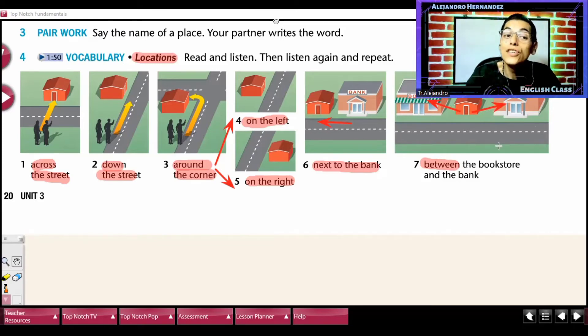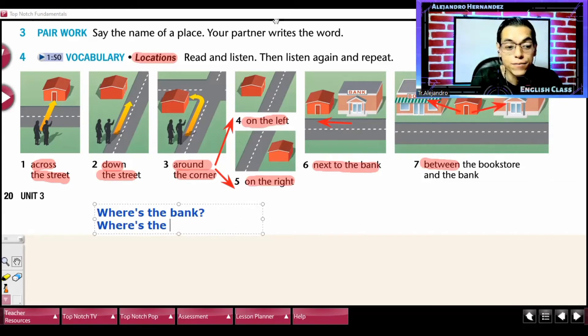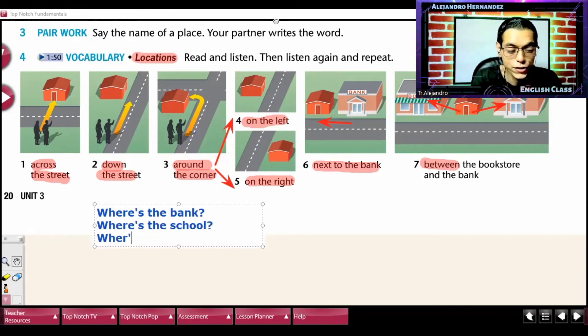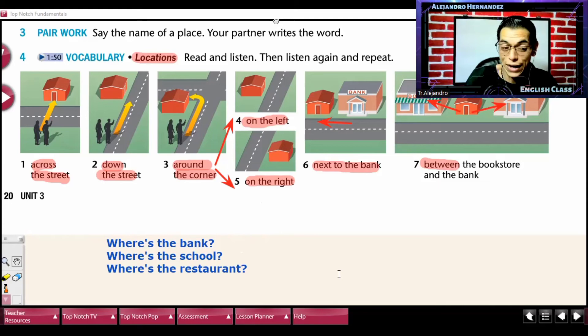Now, we are going to be using, chicos, estas preposiciones para preguntar, where is the place? For example, where's the bank? Where's the school? Where's the restaurant? Depending on the place, chicos, vamos a agregar lo que es la pregunta. Where's the bank? Where's the school? Where's the restaurant?